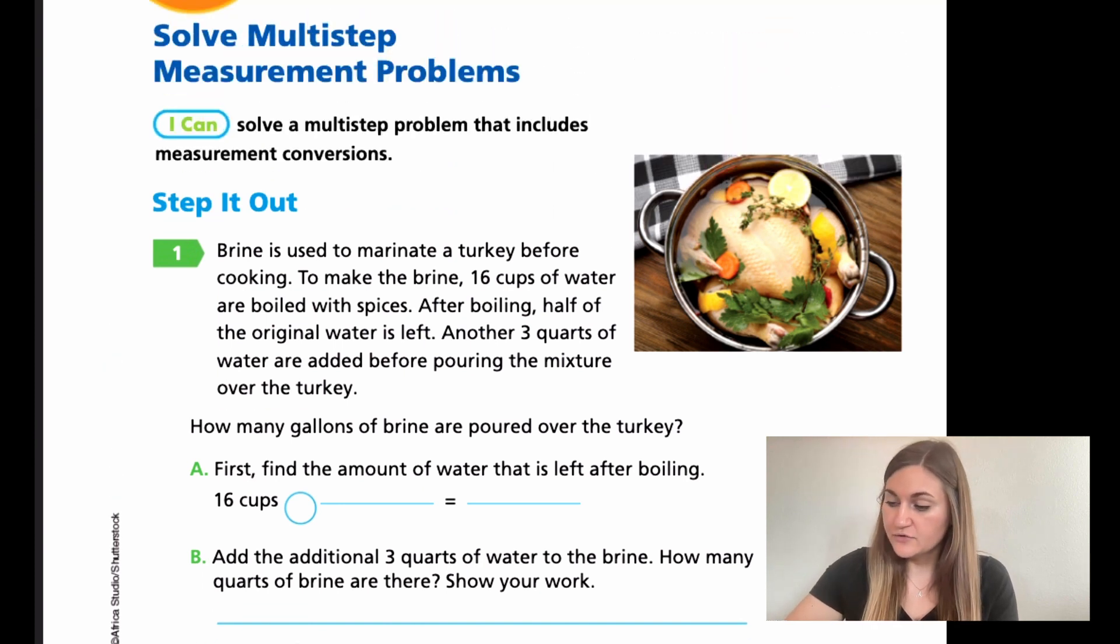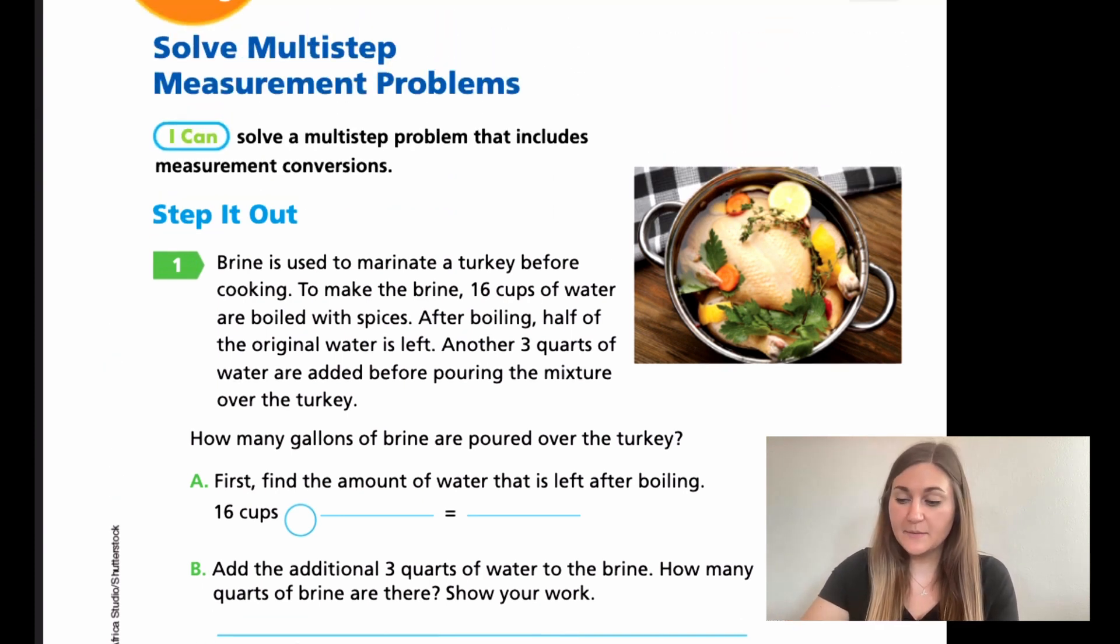Moving into the lesson, we're on page 463. We have number one step it out. It says brine is used to marinate a turkey before cooking. So to make the brine, 16 cups of water are boiled with spices. After boiling, half of the original water is left. Another three quarts of water are added before pouring the mixture over the turkey. So in this problem, I have three different things that are going on here. First off, it's saying that I'm starting off with 16 cups of water. Then after boiling, I only have half of that. Then after that half, I'm adding three quarts. So right off the bat, I know that I have cups and I know that I have quarts, which means I'm going to be converting.